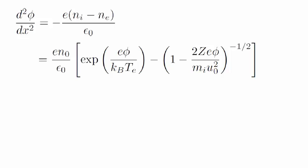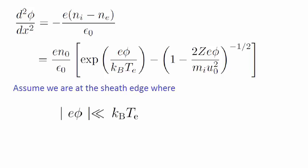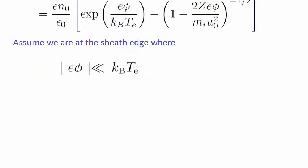Now, this would be quite a difficult equation to solve for phi. So we make some assumptions. We solve for phi in the region at the sheath edge, where the electrostatic potential energy is much less than the electron thermal energy, located here.